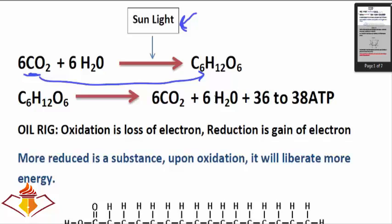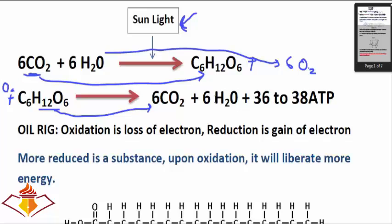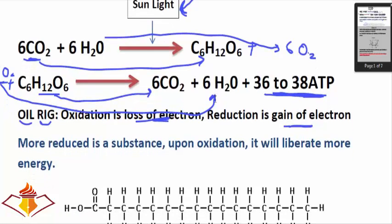Water is oxidized to oxygen in photosynthesis. The reverse of this is called respiration, which happens in animals and human beings — food is oxidized to carbon dioxide and oxygen is reduced to water. In that process we get about 36 to 38 ATP molecules from the oxidation of glucose. Oxidation is the loss of electrons while reduction is the gain of electrons — you can remember this with the mnemonic OIL RIG.